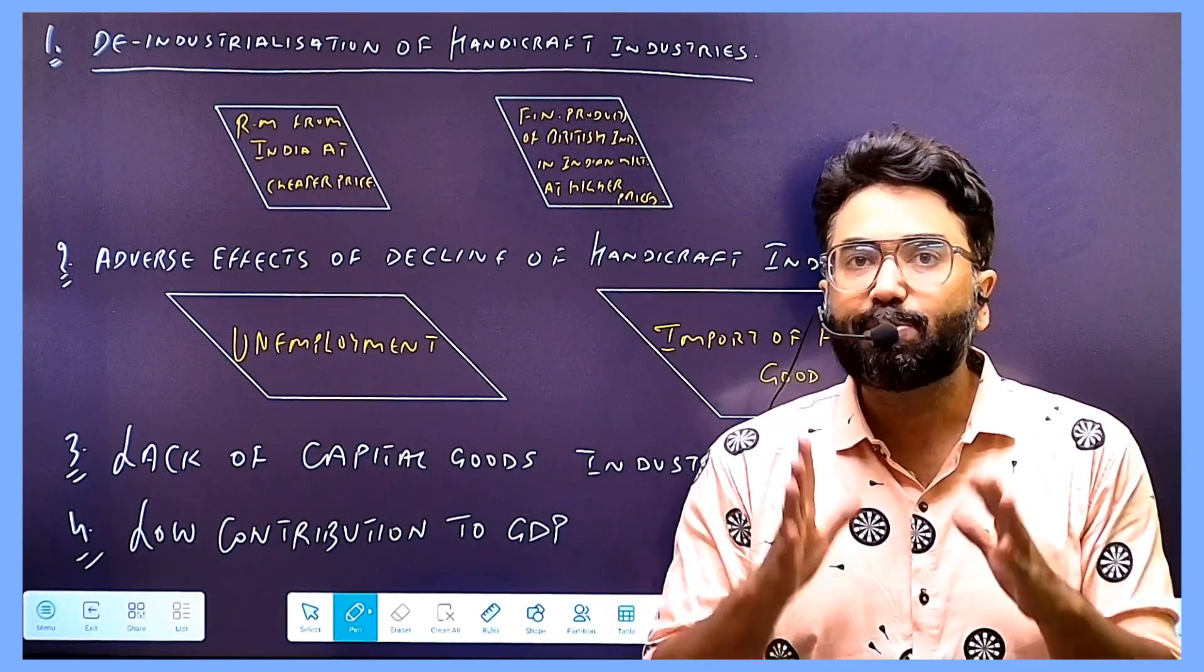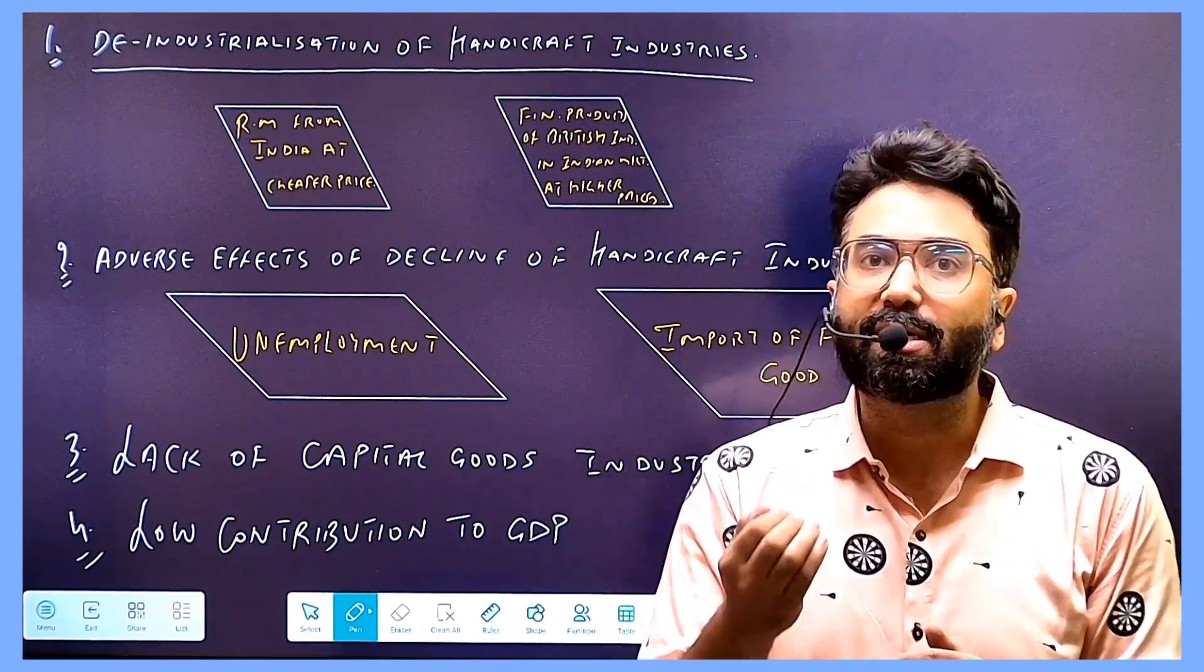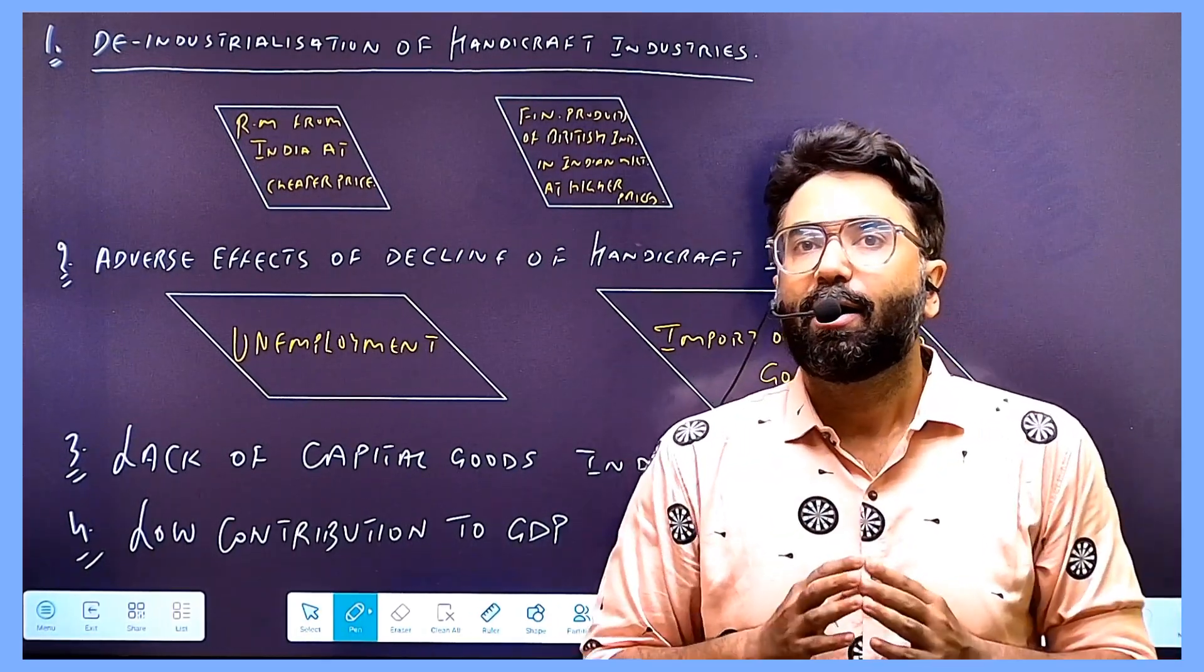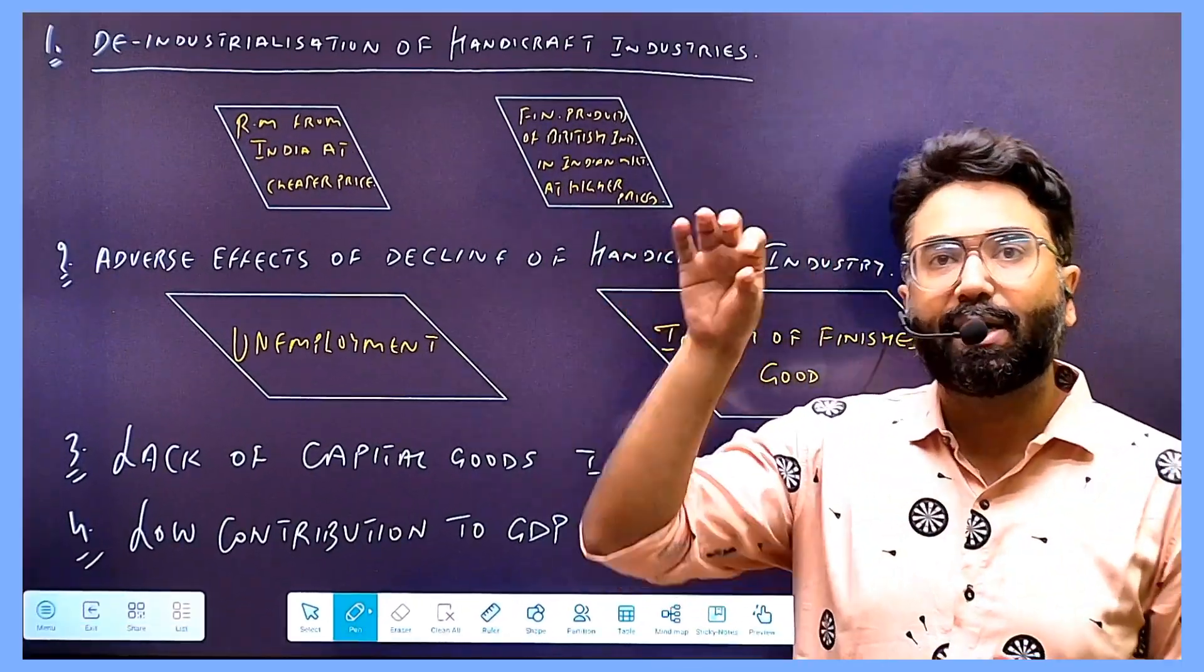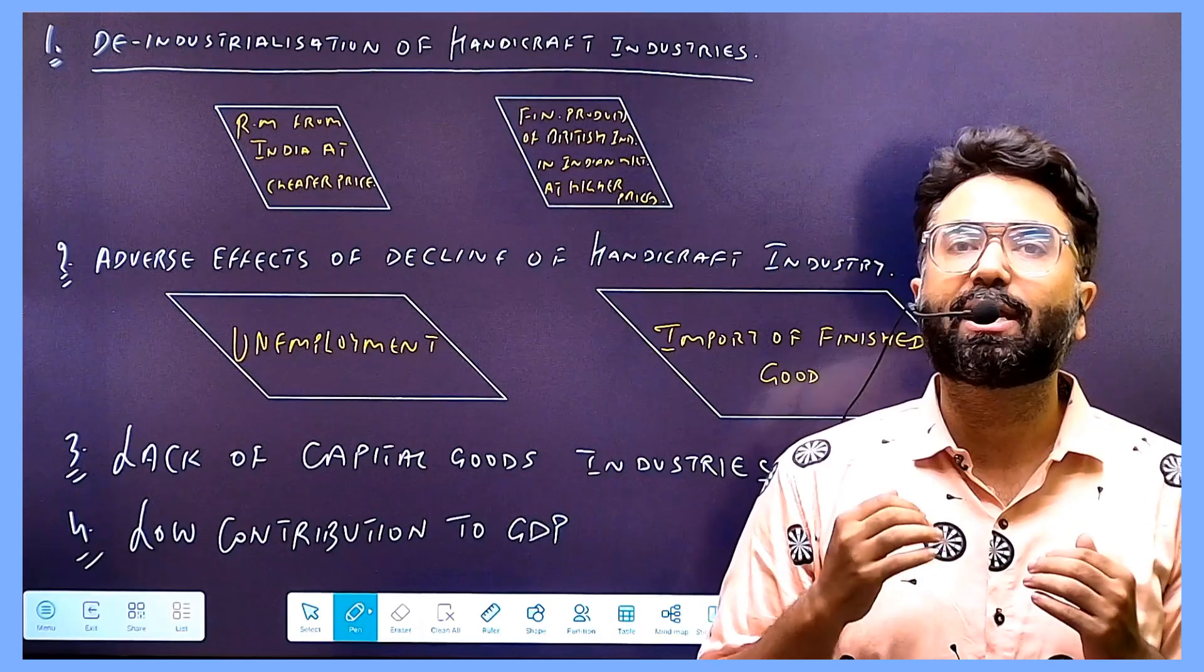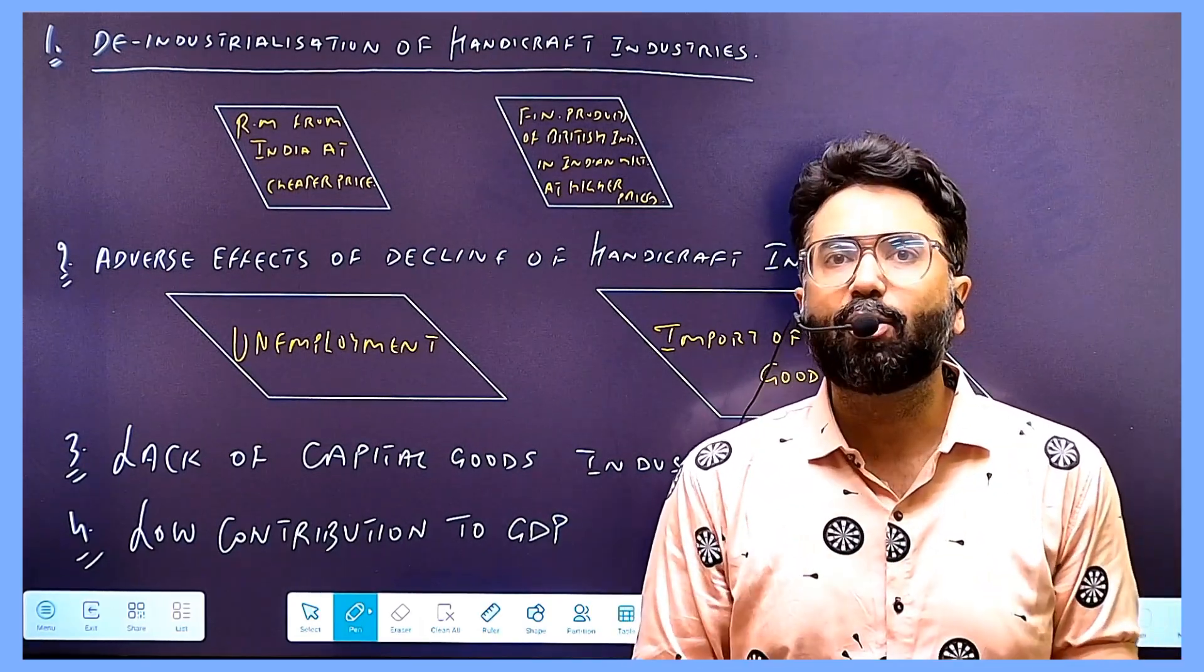When our industries were destroyed, unemployment became big. And when we didn't have any other industries, we had to be dependent on someone. We were dependent on the agricultural sector, putting pressure on agriculture.